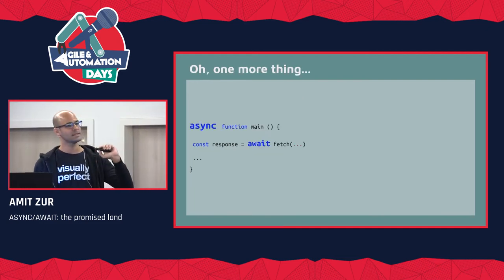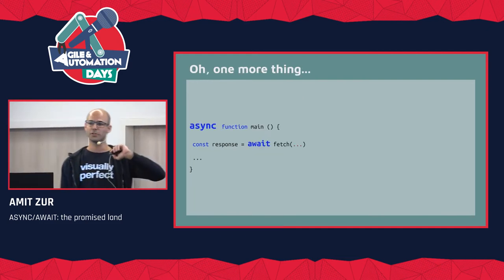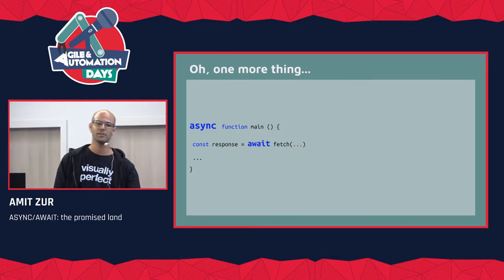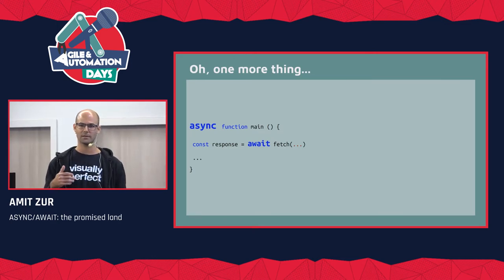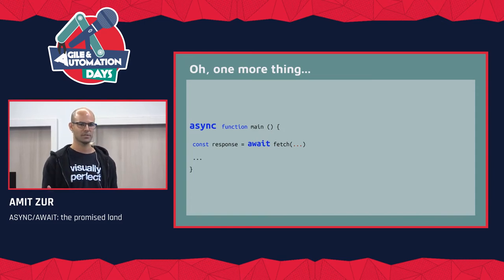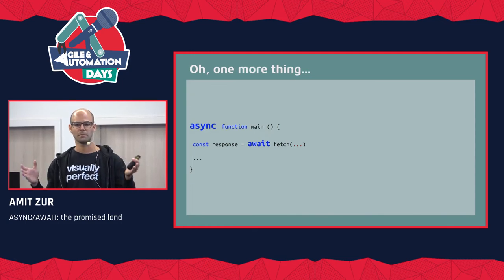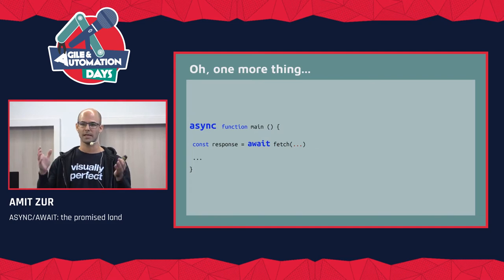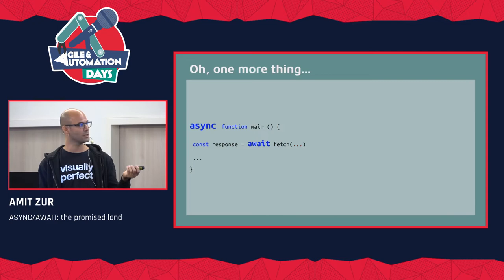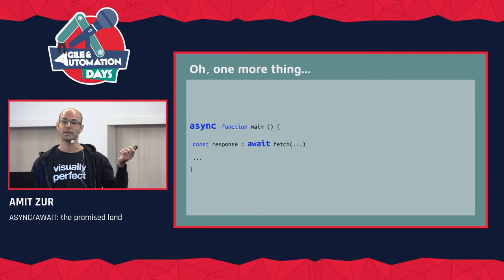One more thing: in order to use await, I need to define the function that the await statement is in as an async function. That's just a way for the language to declaratively and explicitly say this is an asynchronous function, and we'll also understand what using the async keyword means.